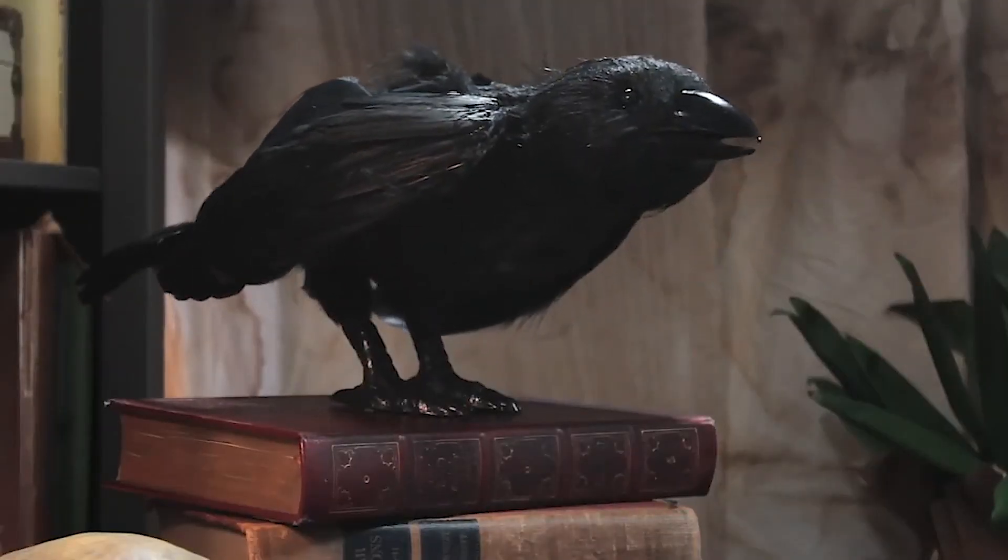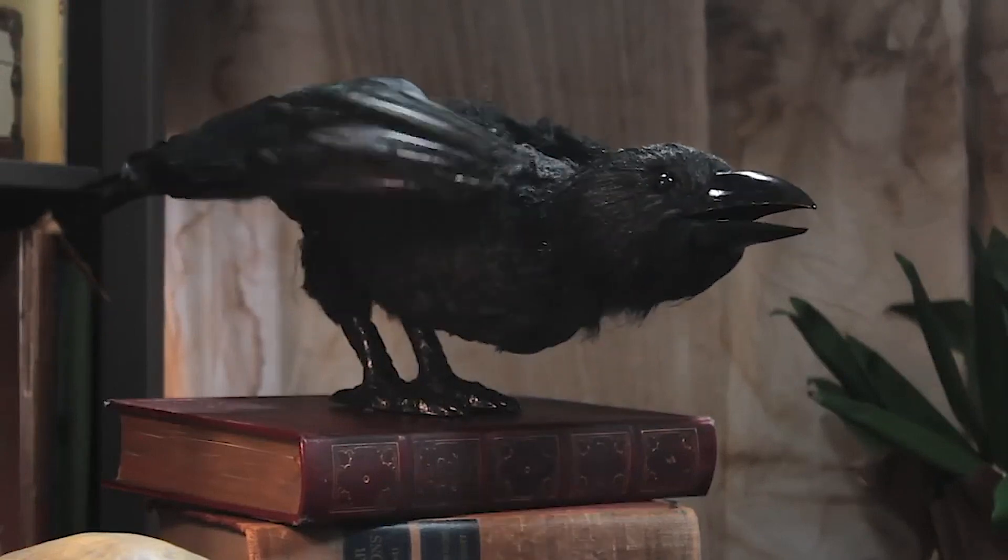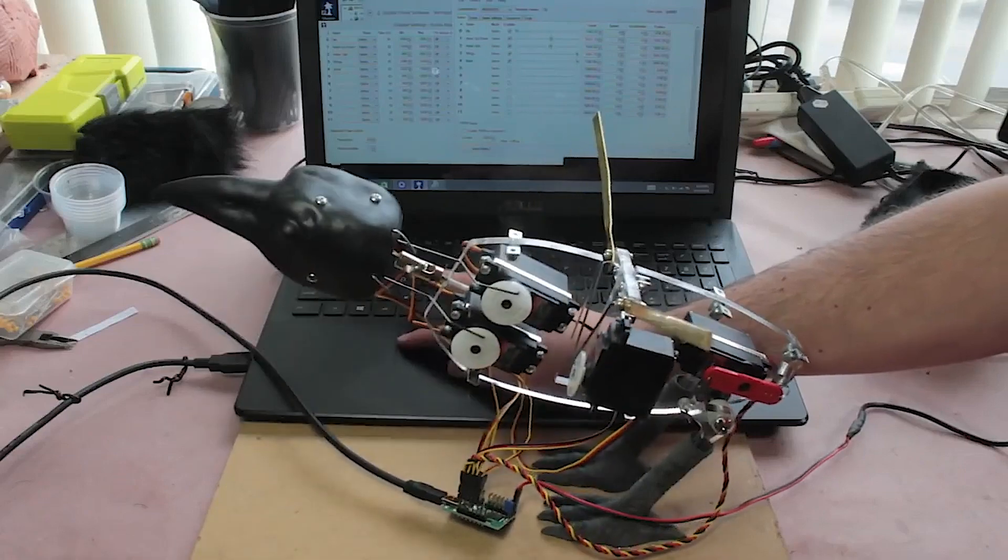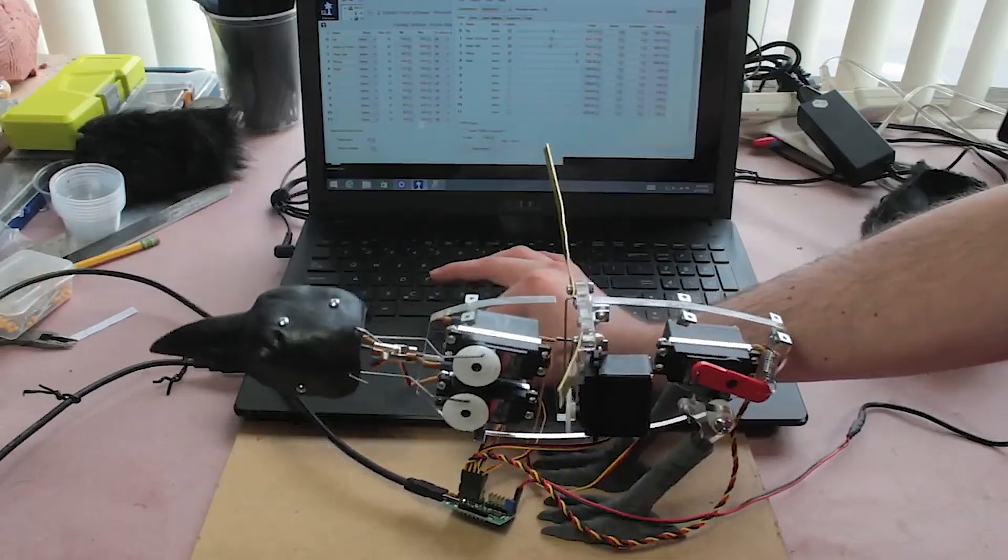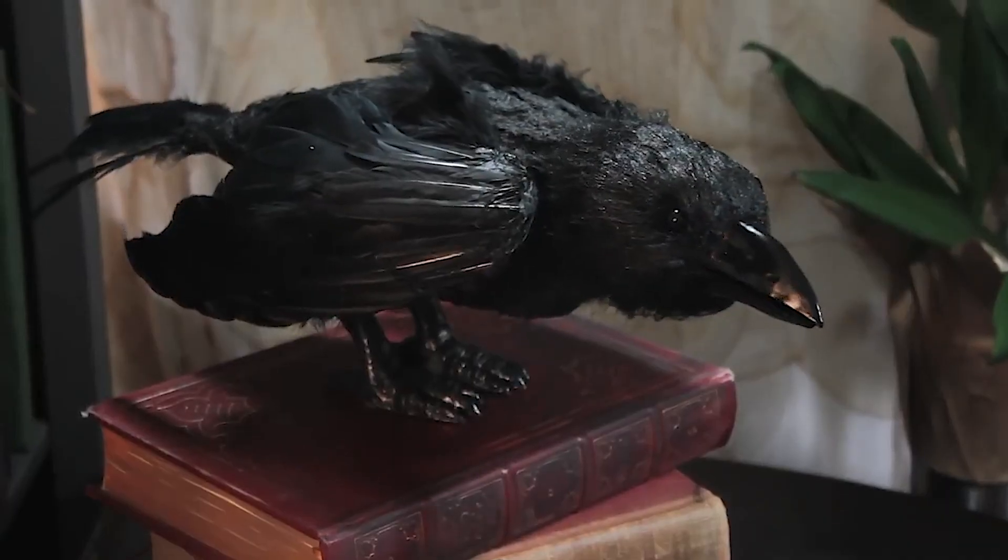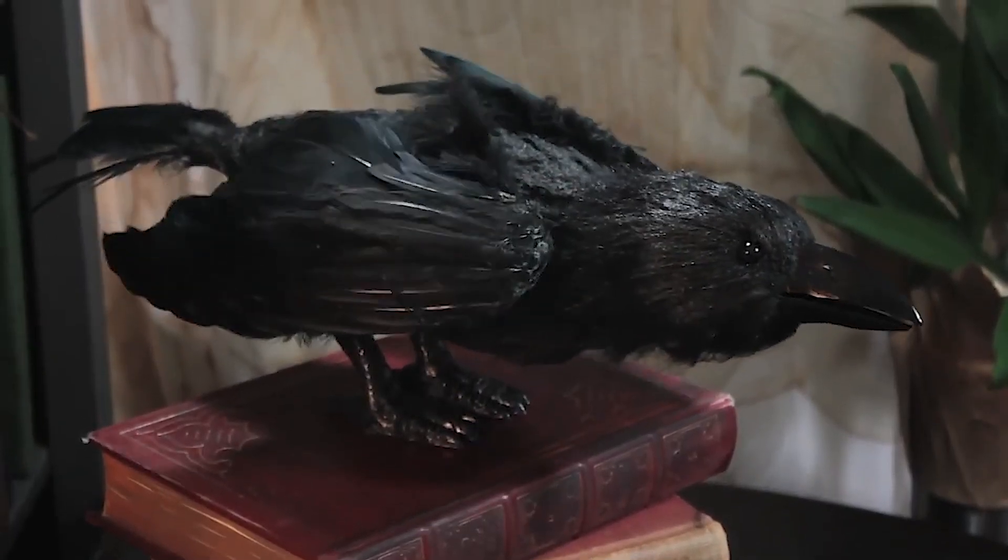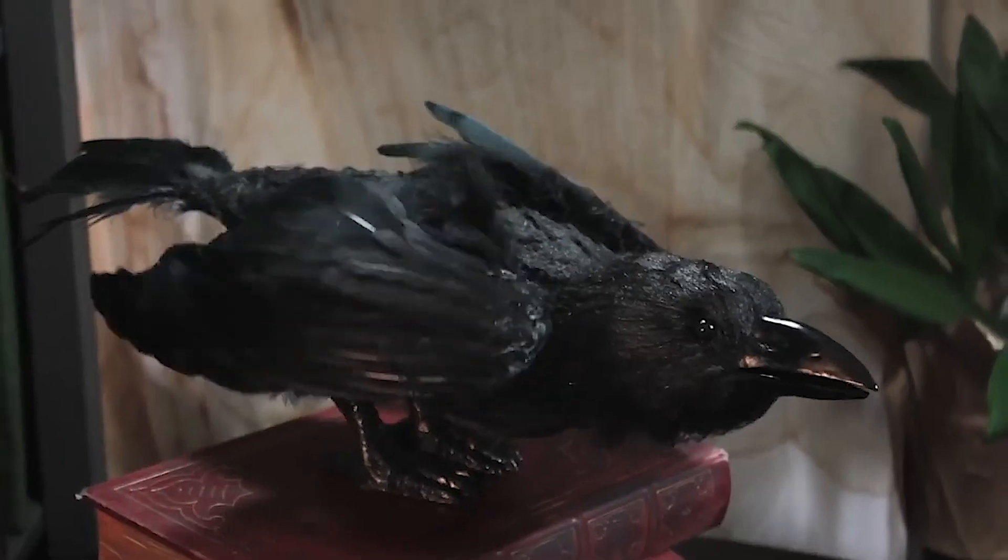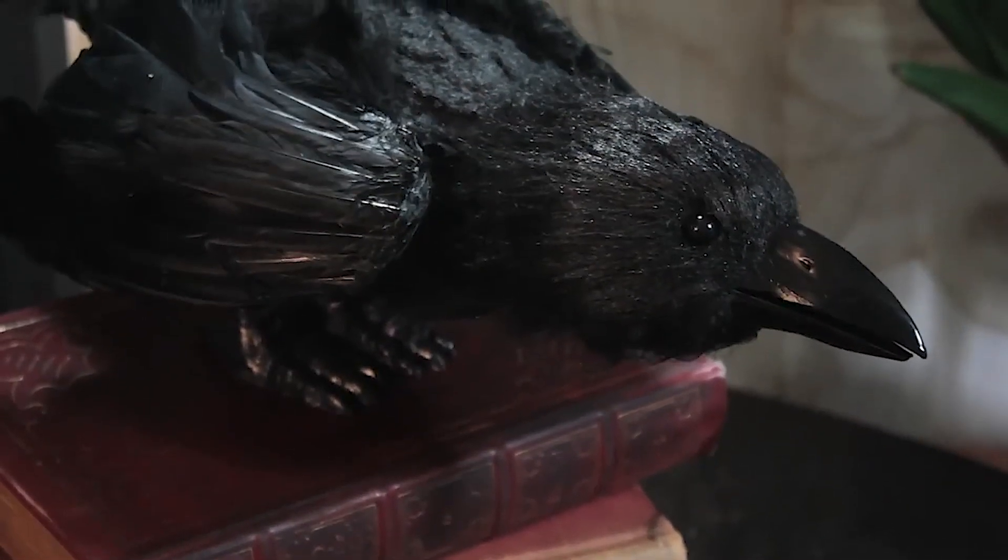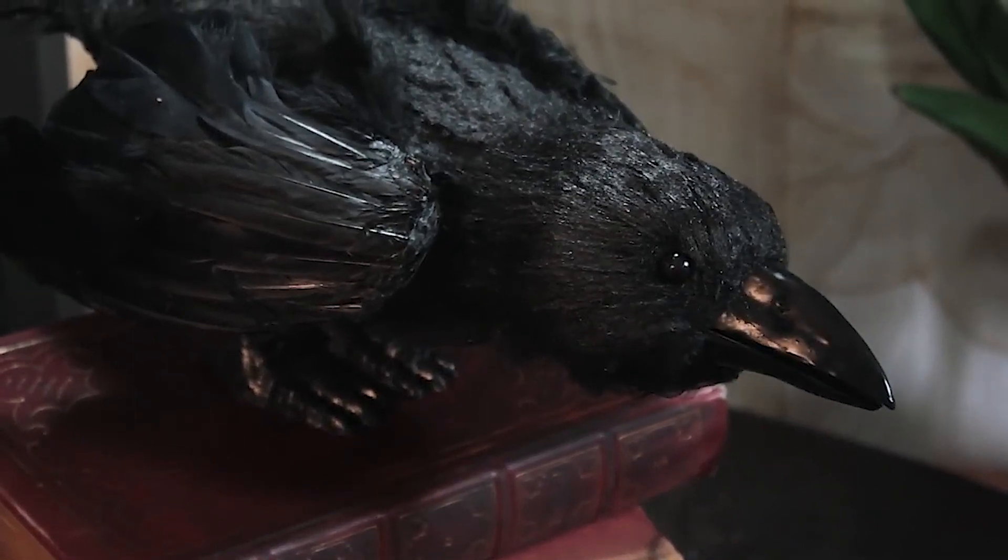It's a DIY kit that comes with all of the components to build the mechanical structures and the feathered coverings for a robotic raven. A lot of people use it in haunted houses, or I've seen some people put it to use in short films. And it's been really fun to see what everybody does with it.